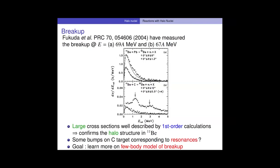For the breakup, these are cross-sections measured by Fukuda and collaborators in a RIKEN experiment at about 70 MeV per nucleon, published in 2004. This is the breakup cross-section on lead, and this on carbon. The cross-section is very large — on the order of barn per MeV — which reveals that the Beryllium-10 plus neutron system is very fragile because it's loosely bound. You also have bumps corresponding to resonances in the spectrum of Beryllium-11. You need a good model of the breakup to properly analyze these experiments — that will be the goal of the rest of the class.